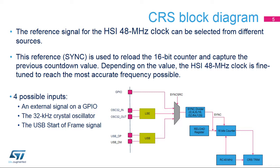Four different sources can be selected for the clock recovery system: an external signal on a GPIO, the 32 kHz crystal, or the USB start of frame signal can be used as a clock source to create a reference signal to calibrate the HSI 48 MHz oscillator.